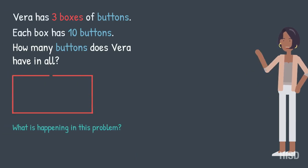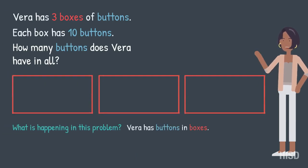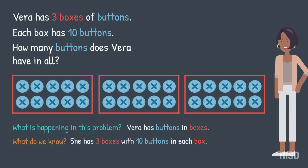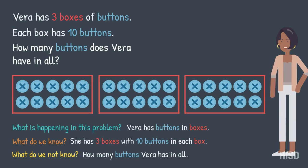What is happening in this problem? Vera has buttons in boxes. What do we know? She has three boxes with ten buttons in each box. Each box represents one group. What do we not know? How many buttons Vera has in all?